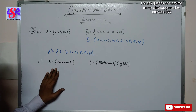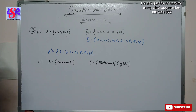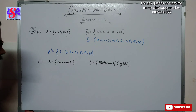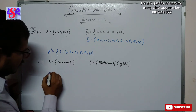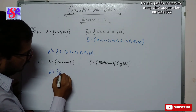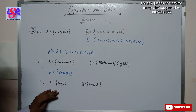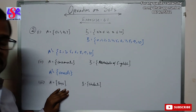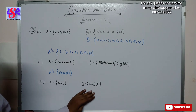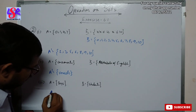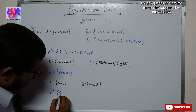In the second part, A is the set of consonants and the universal set is all alphabets of English. So A complement = vowels. In the third part, A is the set of boys in the class and the universal set is all students of the class. So A complement = girls of the class.